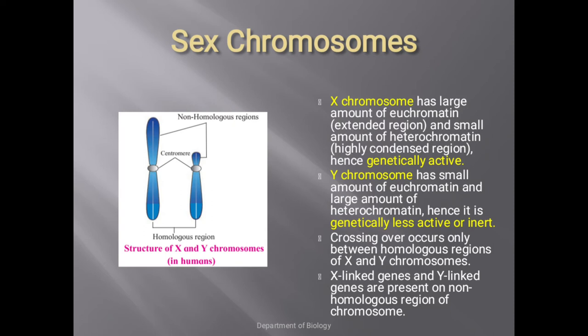Crossing over occurs only between the homologous region of X and Y chromosomes. You can see in the diagram that the homologous regions are the equal or same regions. X-linked genes and Y-linked genes are present on the non-homologous region of the chromosomes.